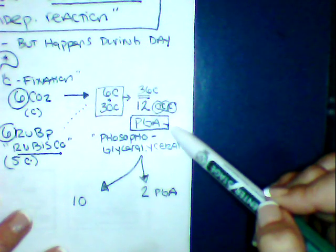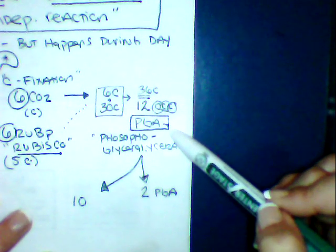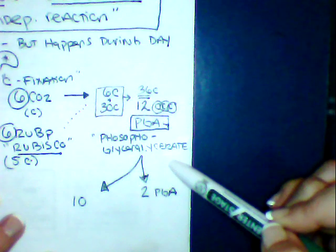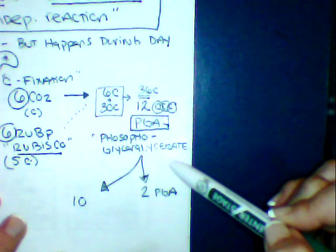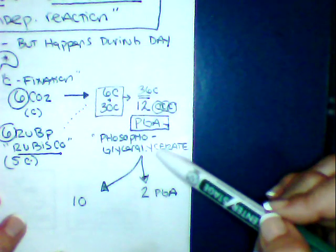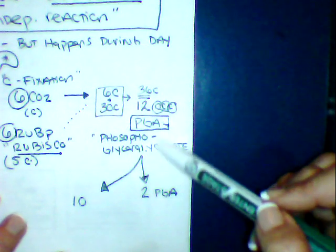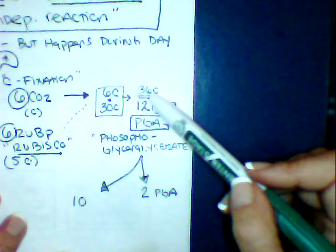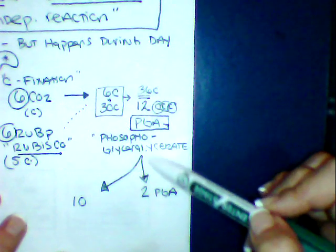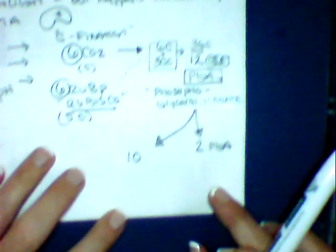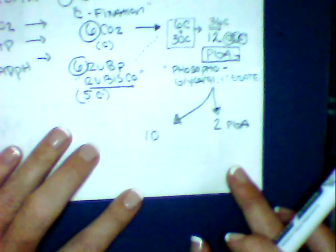This is actually what's known as PGA, which is phosphoglycerate. This is even too much for the actual chloroplast to hold, so we're going to continue our Calvin cycle and break this apart as well.